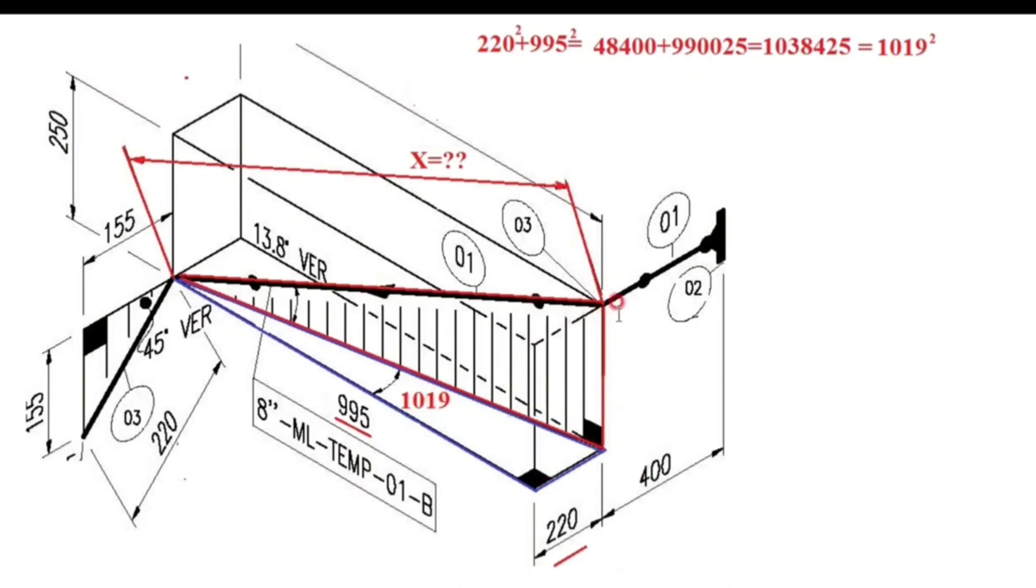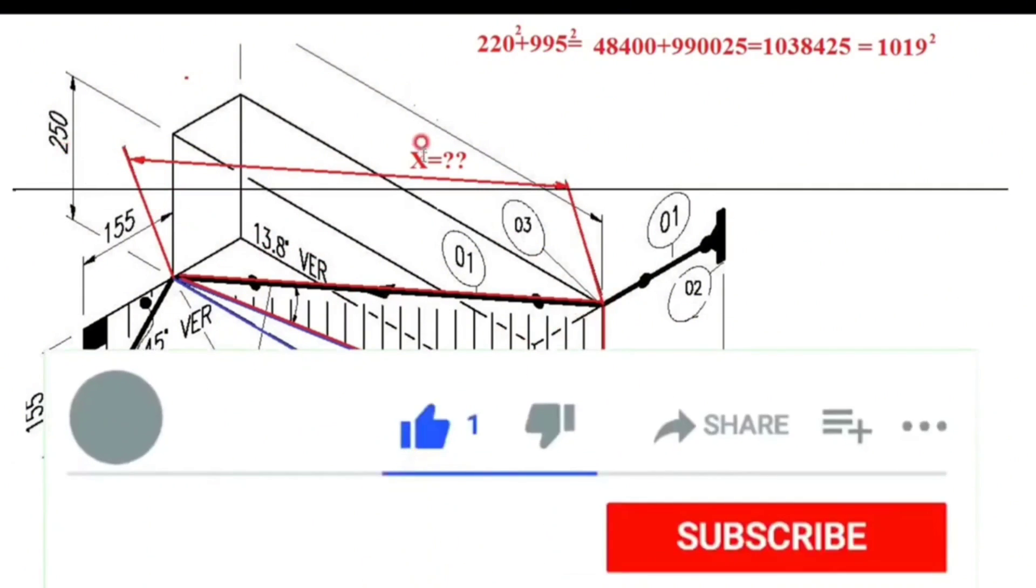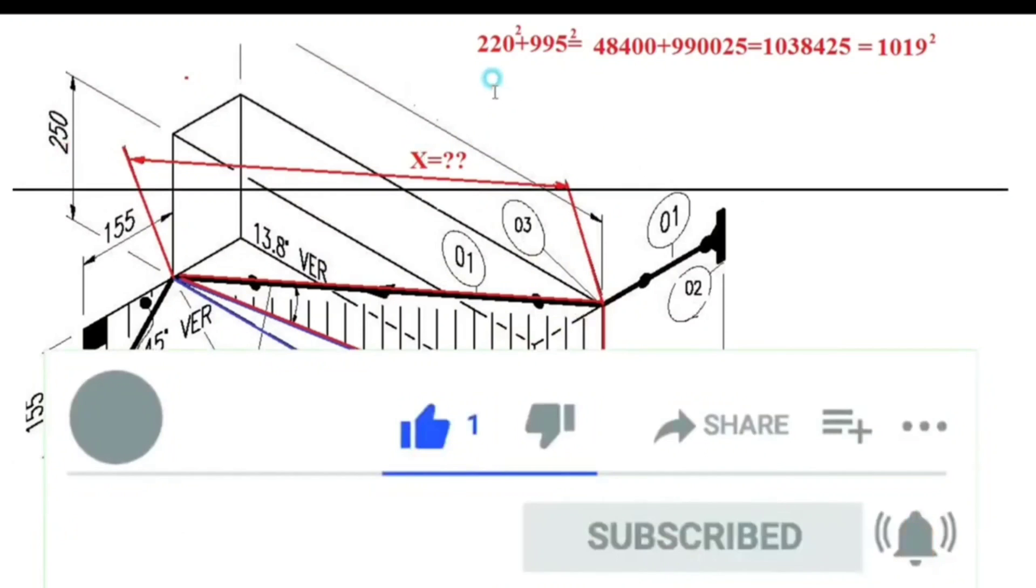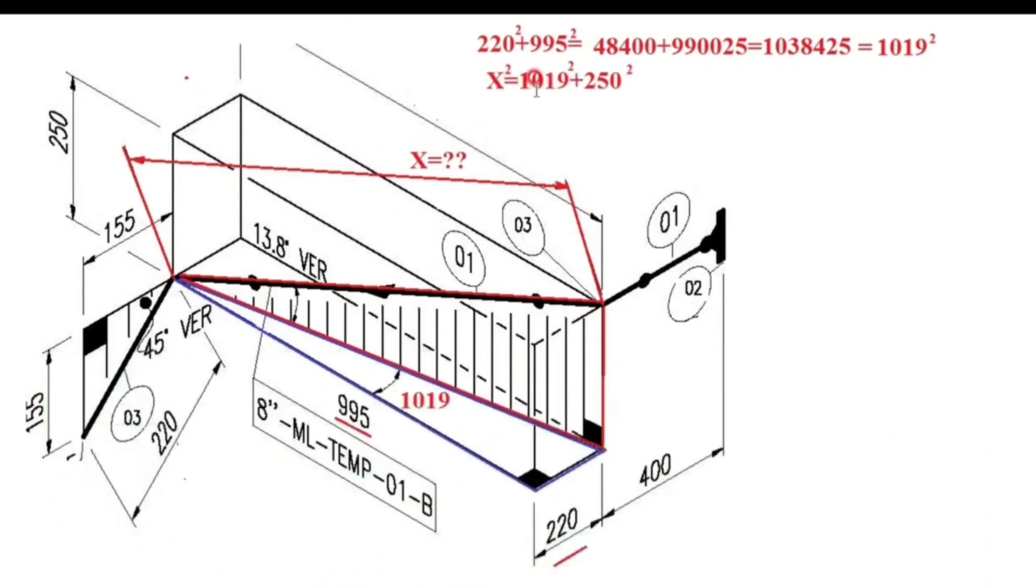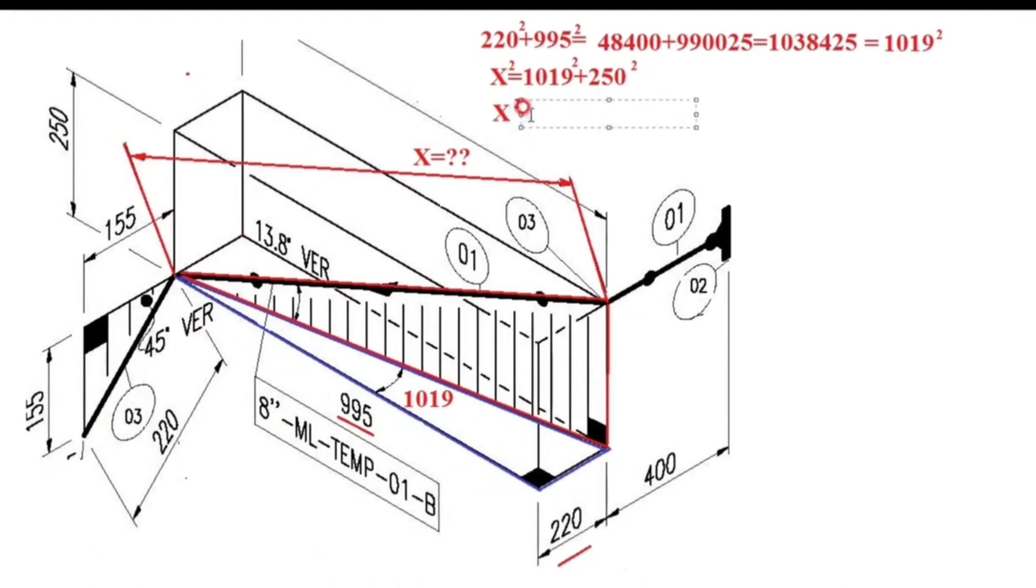The length of one side of the red triangle is 1019, and the length of the other side is 250. Using the Pythagorean theorem, the length of the hypotenuse of the red triangle can be calculated. The square of the hypotenuse of the red triangle will be equal to the sum of the square of 250 and the square of 1019.